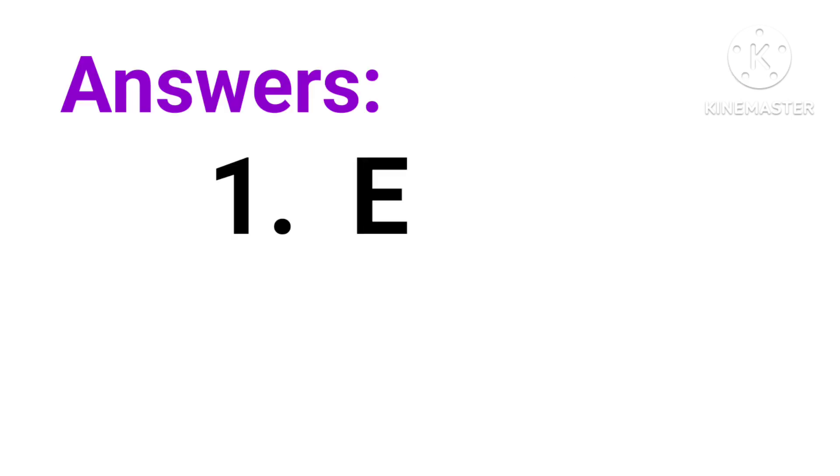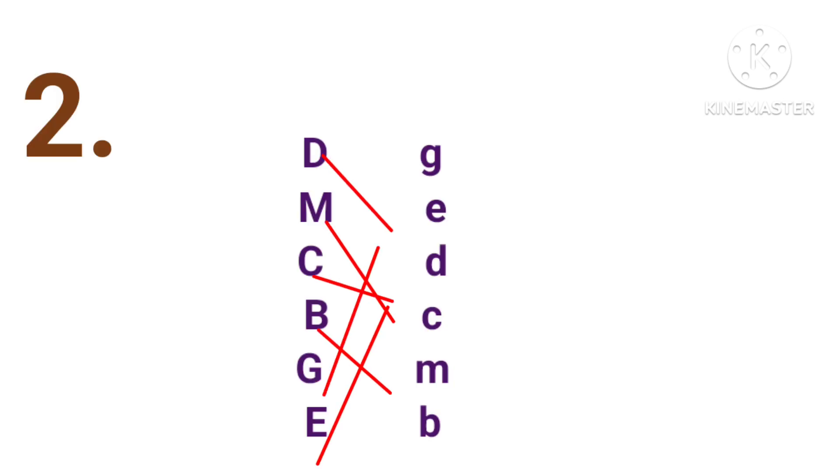My dear children, now you check your answers. Your answers are given. Number 1, E. You are given A, B, C, D and F. You have to write E in the gap. Number 2 answer, in this way you have to match. I think your answer is correct, isn't it? You have done similar as shown here. Number 3 answer, A. Your answer is A.